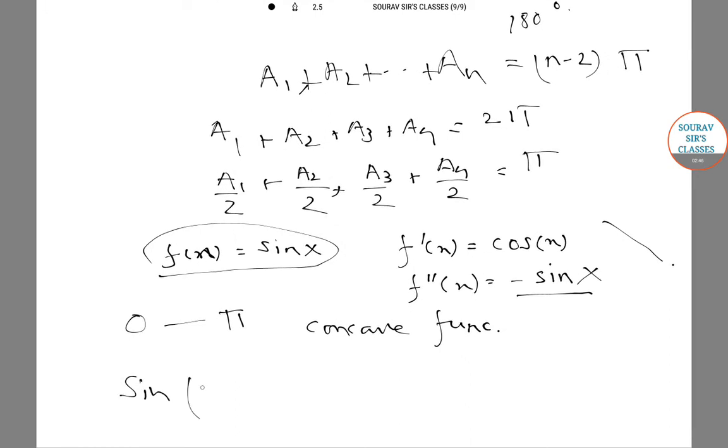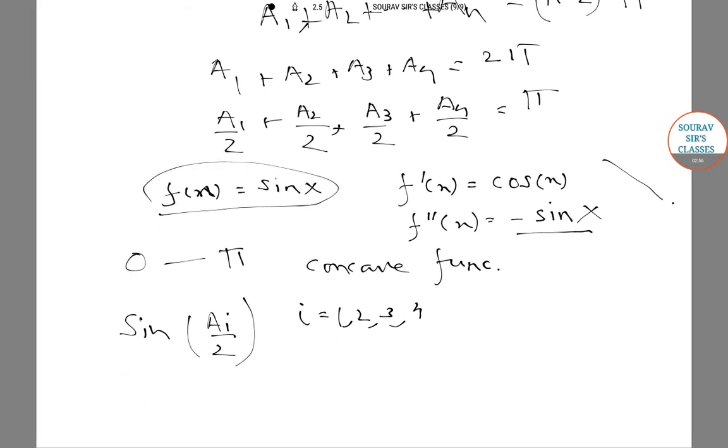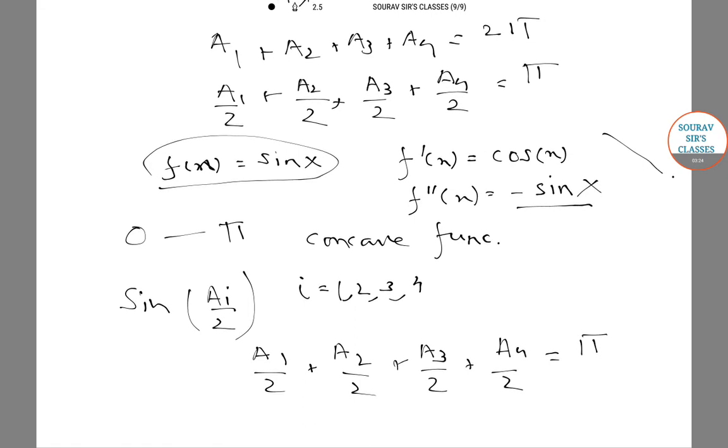Hence, sin(ai by 2) for all four i's is also a concave function. And their summation would also be a concave function with their maximum value subject to a1 by 2 plus a2 by 2 plus a3 by 2 plus a4 by 2 equals pi. This can be obtained when for each ai we will have pi by 2.